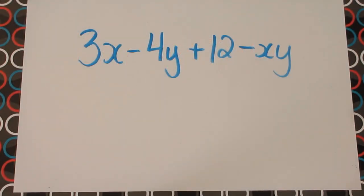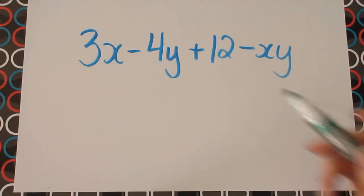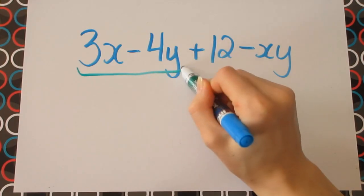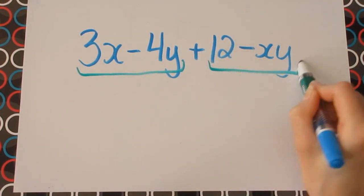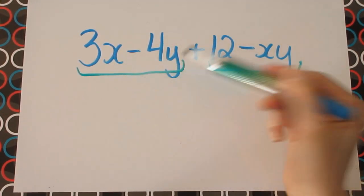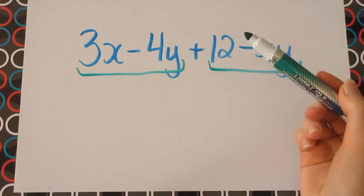Sometimes you'll be given a question that looks like it can't be factored. Here, if we divide these terms into two groups, you can see there's no common factors between the first two. We have a 3 and a 4, and an x and a y.